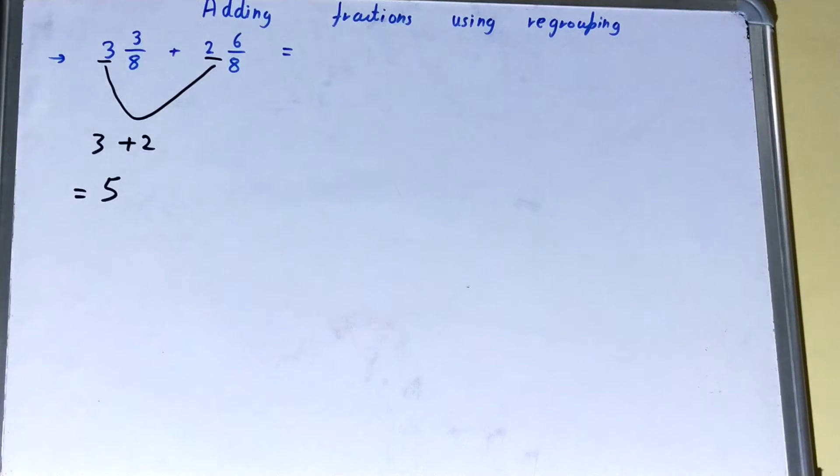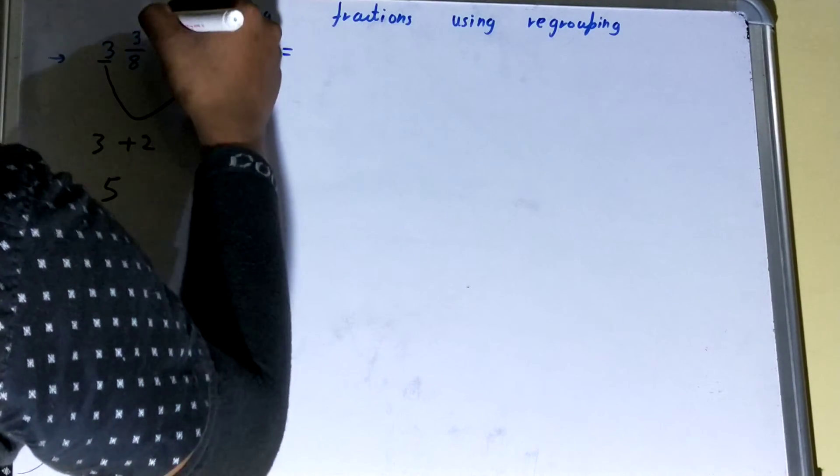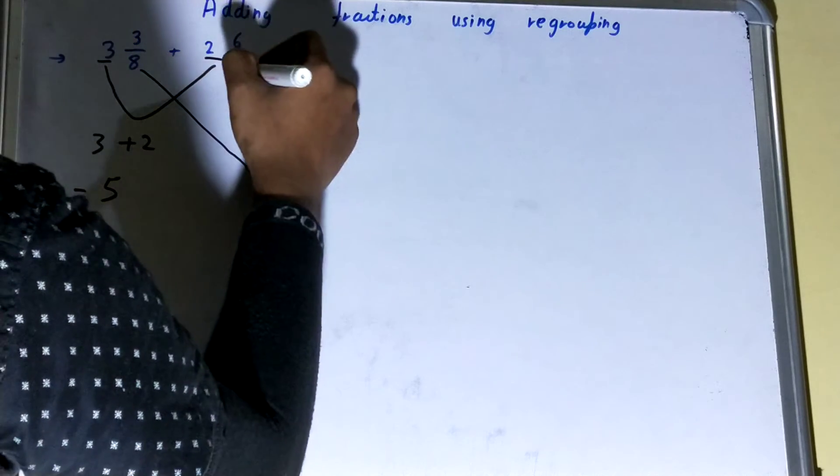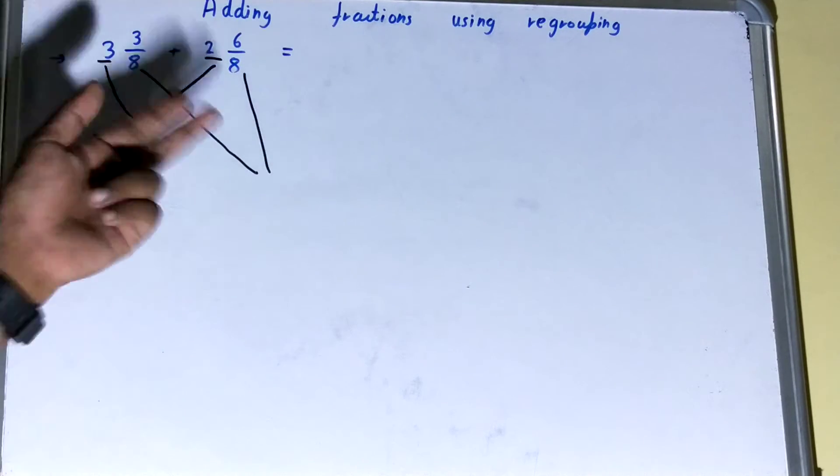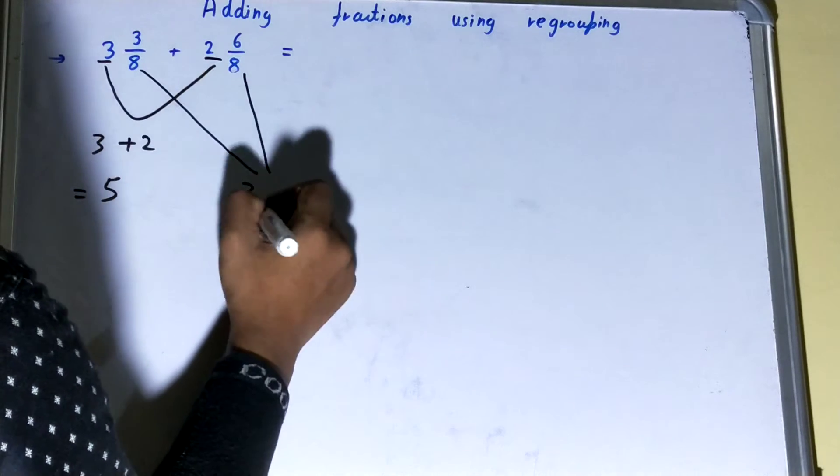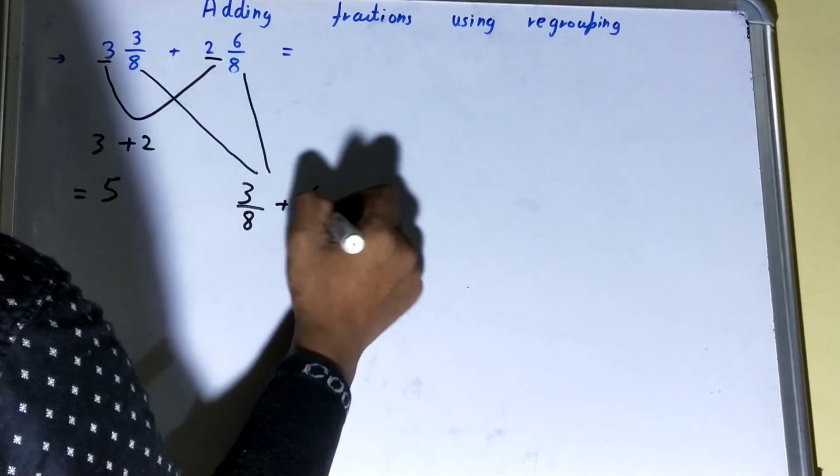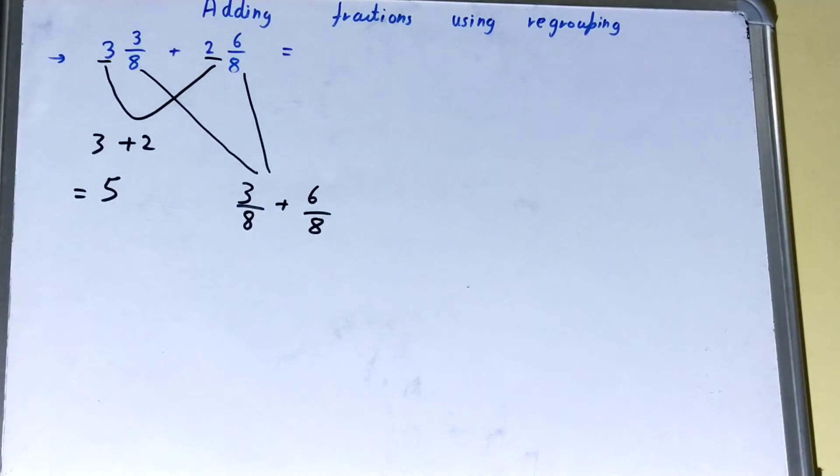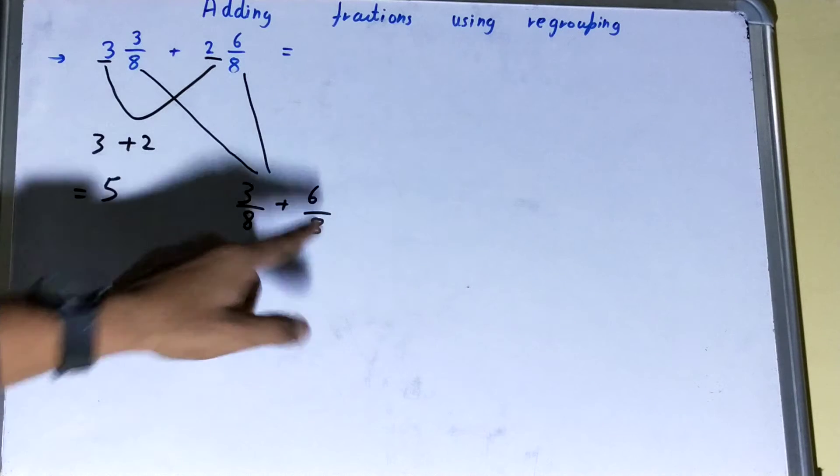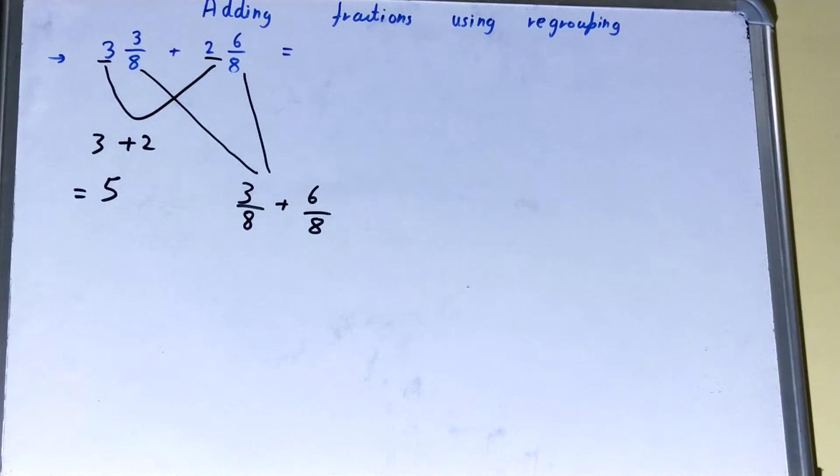Next thing you need to do is group the fractions in the expression. So the fraction is 3/8 plus 6/8. That's why I told you the denominator should be matching. If it is not matching, then you need to add certain steps to find common denominator, which will make your work a bit longer.